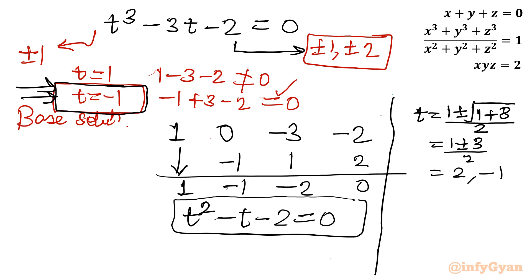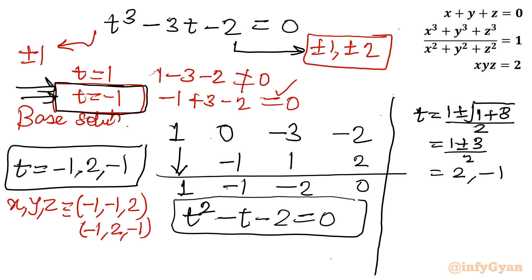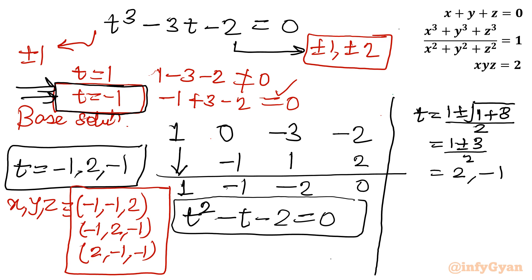So the three values of t are: negative 1, 2, and negative 1. Considering all permutations, the solution sets for (x, y, z) are: (negative 1, negative 1, 2), (negative 1, 2, negative 1), and (2, negative 1, negative 1). We are having 3 sets of values.